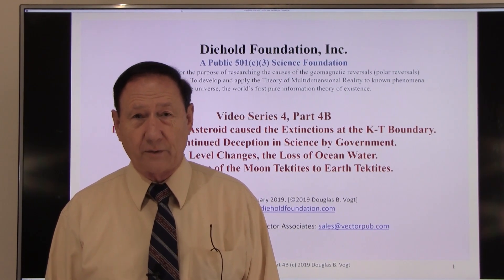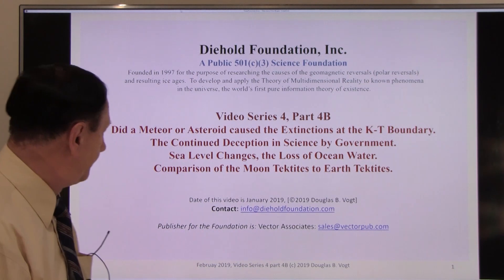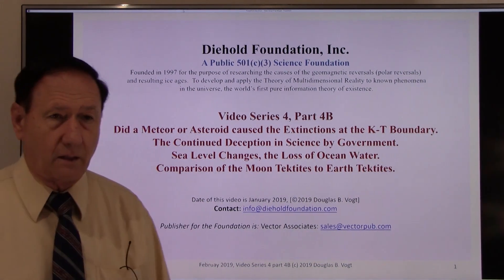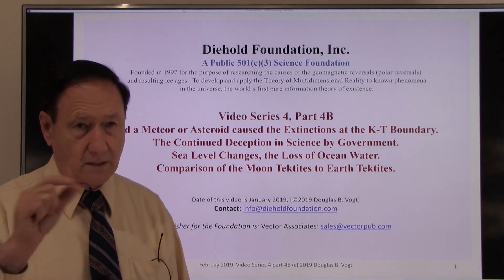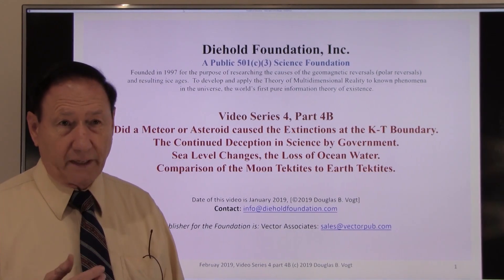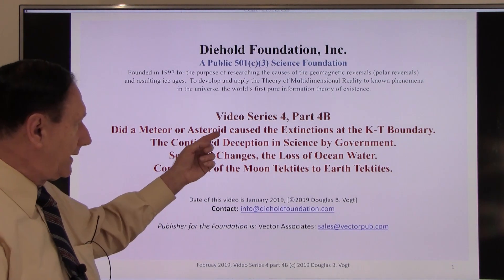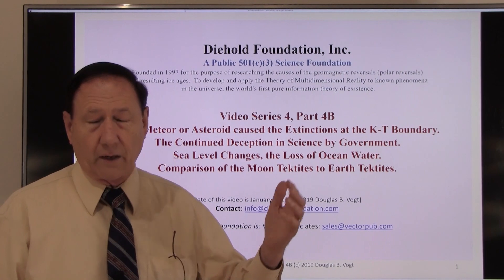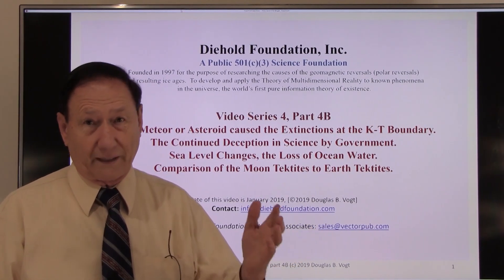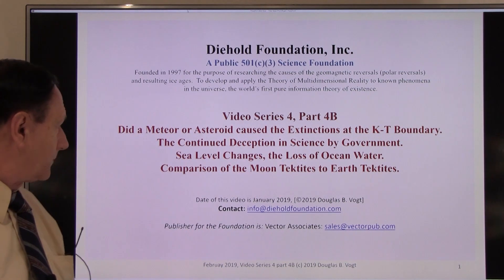I'm Douglas Vogt from the Diehold Foundation. This is part 4B of the video series. We're going to cover whether a meteor or asteroid caused the extinctions at the KT boundary. KT stands for Cretaceous — the reason it's a K rather than a C is that the Germans originally named it and spell Cretaceous with a K. We'll also discuss continued deception in science by government and why every scientist is now locked into the idea that mass extinctions require something hitting the earth.